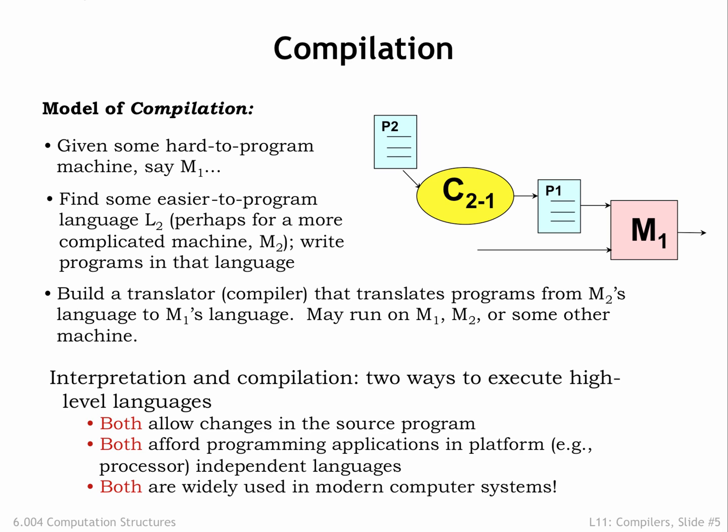So now we have two ways to execute a high-level language program: interpretation and compilation. Both allow us to change the original source program, both allow us to abstract away the details of the actual computer we'll use to run the program, and both strategies are widely used in modern computer systems.